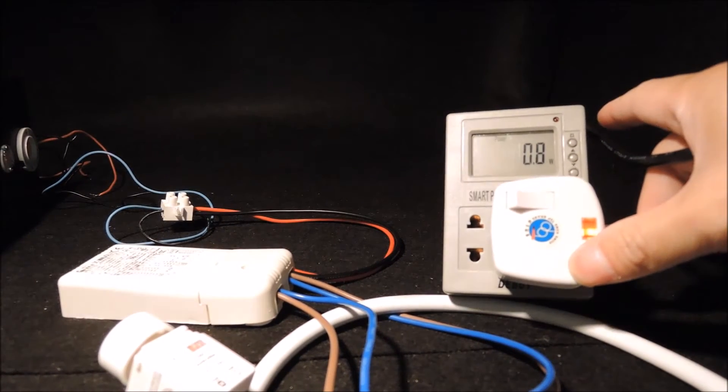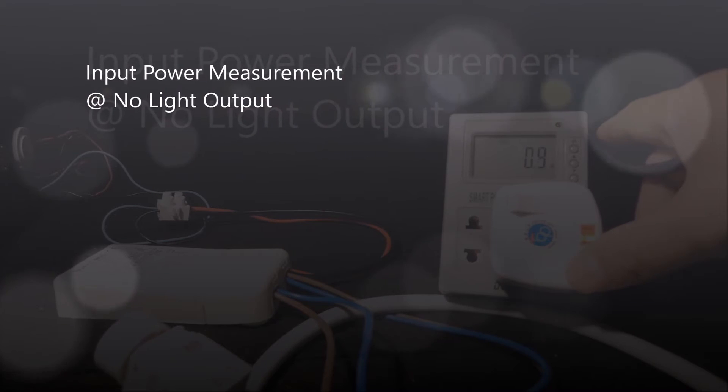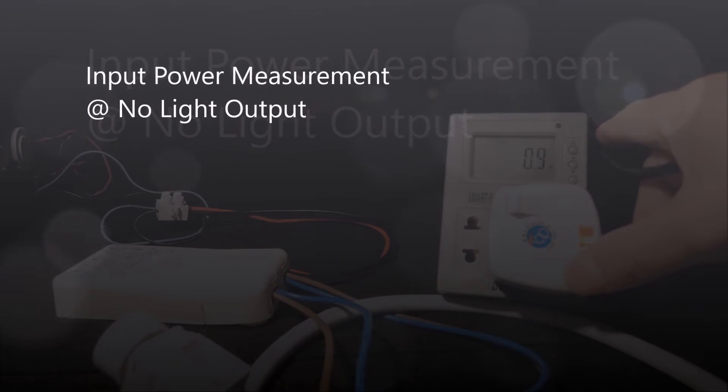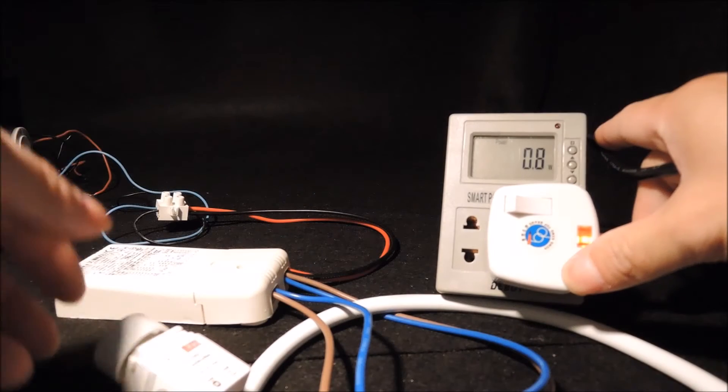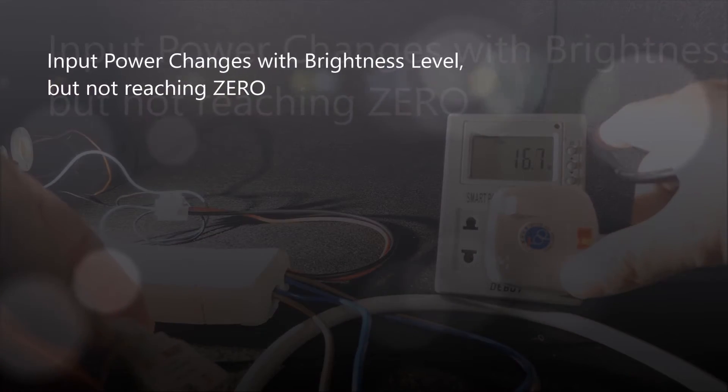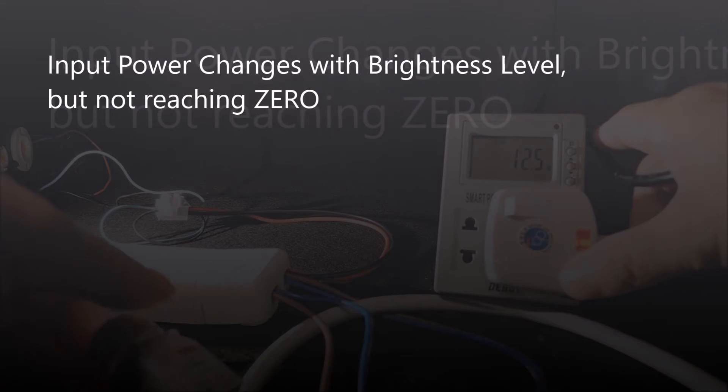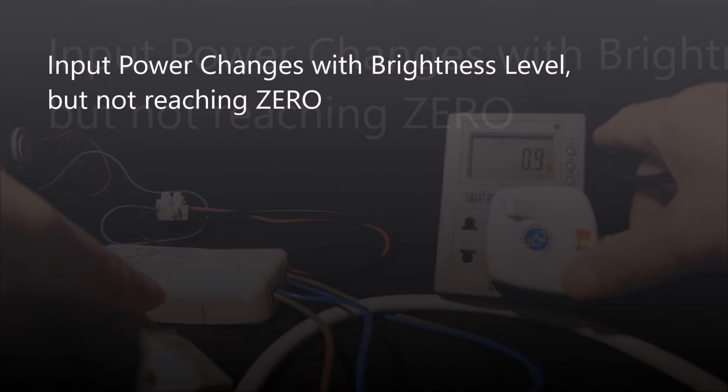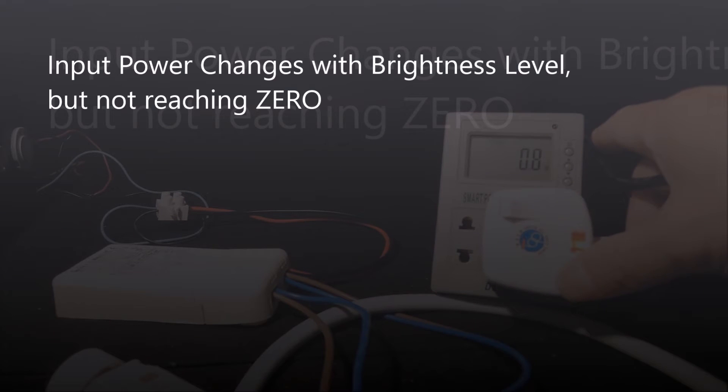Interestingly, although we don't see any light output from the power meter, you'll see there's still a certain level of power consumption here. The input power definitely changes with the dimming or the brightness level, but it would not reach zero even when we see no light output.